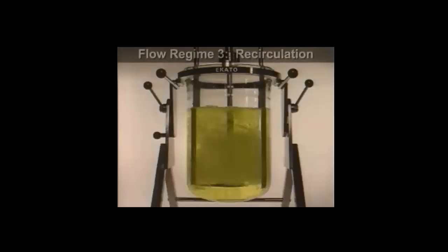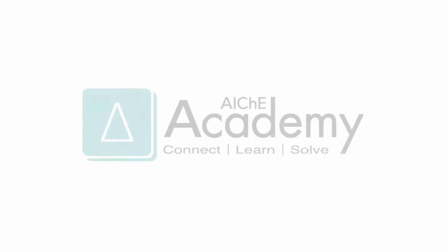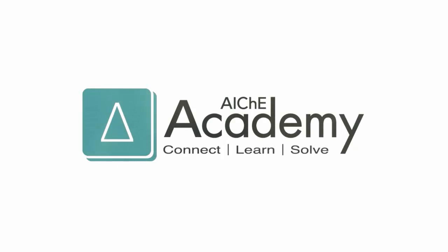The final regime is recirculation, where gas is effectively dispersed, including recirculating bubbles below the impeller. Mass transfer rates are maximized with the recirculating dispersion. This condition requires a high impeller speed to gas flow rate ratio.